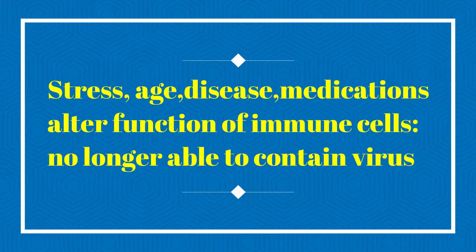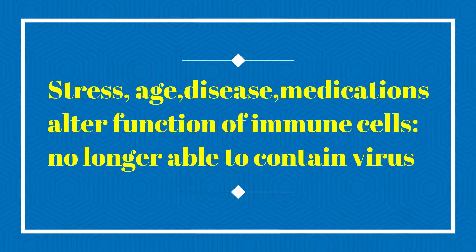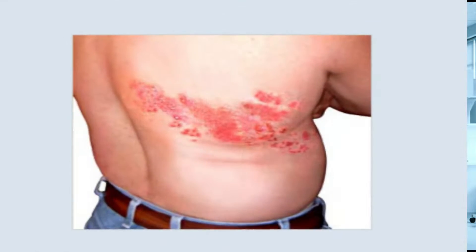Immune cells in the body contain the virus until a stressful event, a disease, or medication alters the function of those cells, and the virus is at that point able to reactivate. The reactivated virus travels in the nerve to the skin, where a red flat rash forms that may progress to vesicles or blisters, then to pus-filled pustules, and finally crusts over within 7 to 10 days. The skin heals within 2 to 4 weeks.